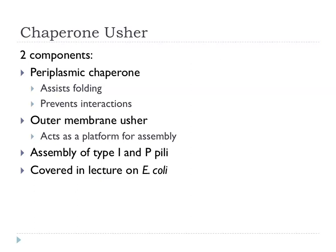The Chaperone-Usher system was already mentioned in a previous lecture. In this system there is a periplasmic chaperone which binds to pilin subunits while they're in the periplasm, ensuring correct folding and preventing them from interacting with each other — stopping pili from polymerizing in the periplasm. Then there is an outer membrane usher which acts as a platform for assembly. These systems are involved in assembly of different kinds of pili, including type 1 pili and P pili.